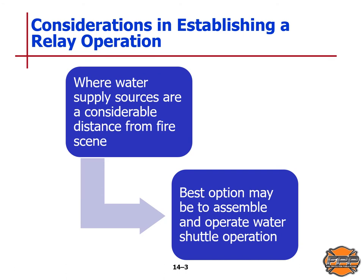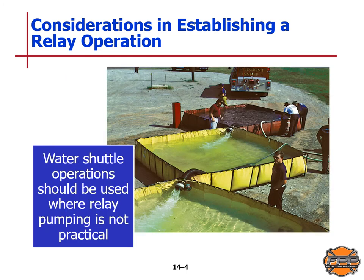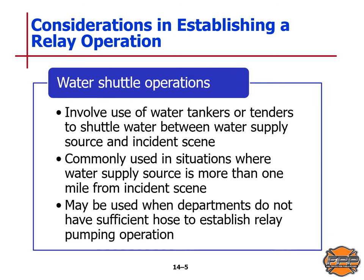Where water supply sources are a considerable distance from the fire scene, the best option may be to assemble and operate a water shuttle operation. Water shuttle operations should be used where relay pumping is not practical. They involve the use of water tankers or tenders to shuttle water between water supply sources and the incident scene. These are commonly used in situations where the water supply source is more than one mile from the incident area, or may be used when departments do not have sufficient hose to establish a relay pumping operation.